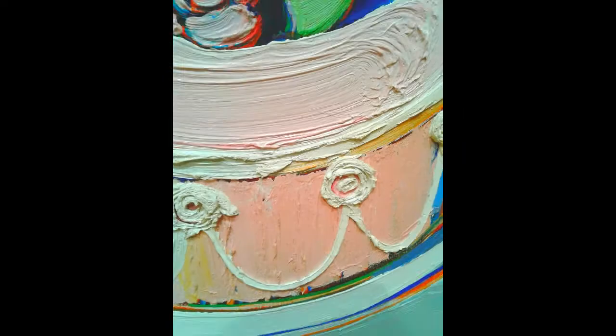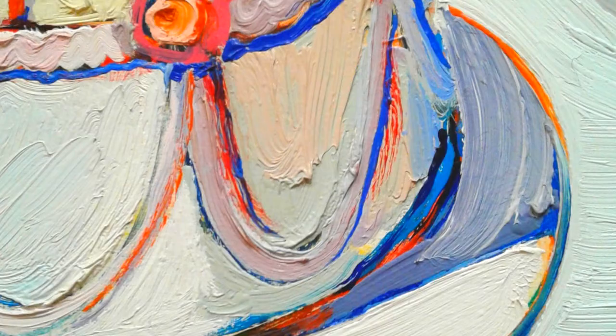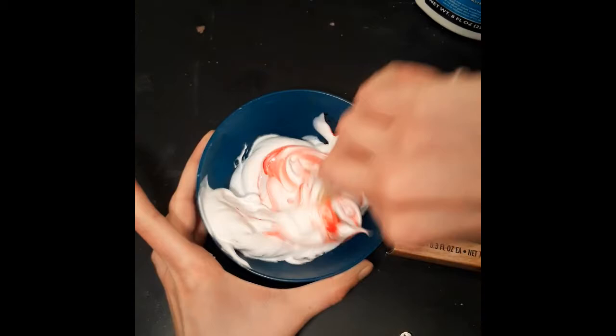When you look at a Wayne Thiebaud painting close up, you can see that he used the paint just like icing. His work is full of beautiful texture. My favorite way to add texture is shaving cream paint. Some of you guys have made this in class with me.